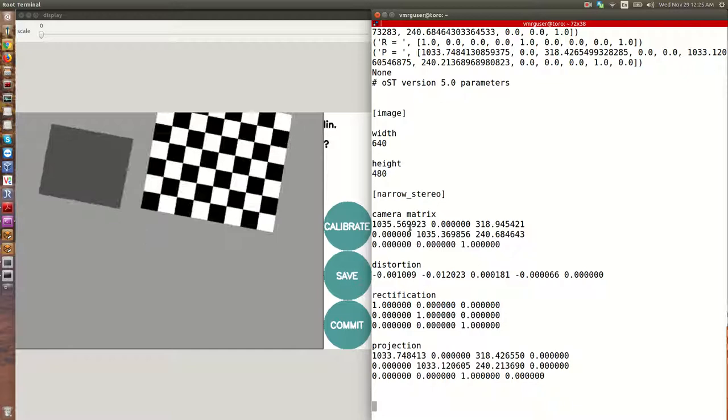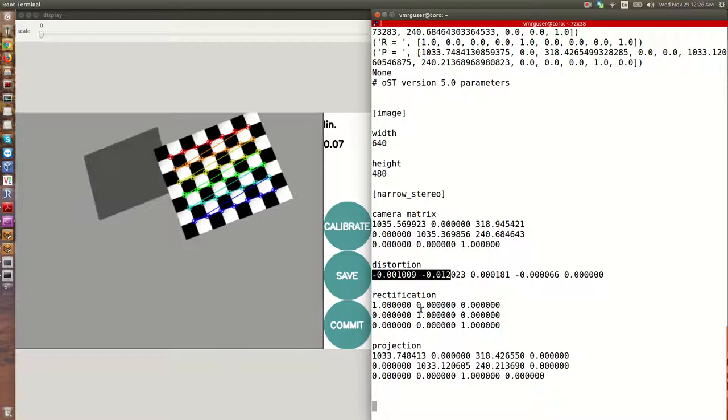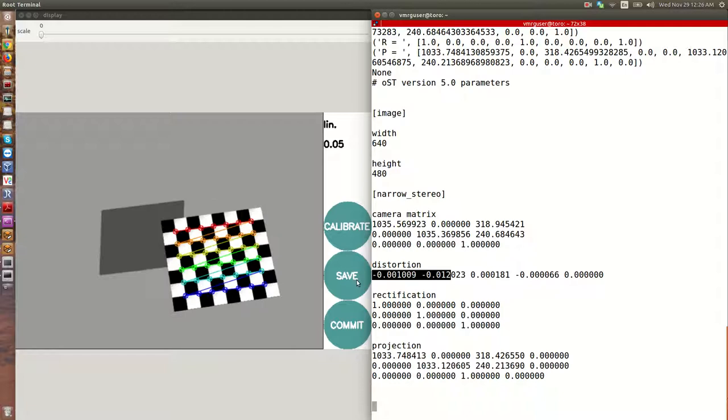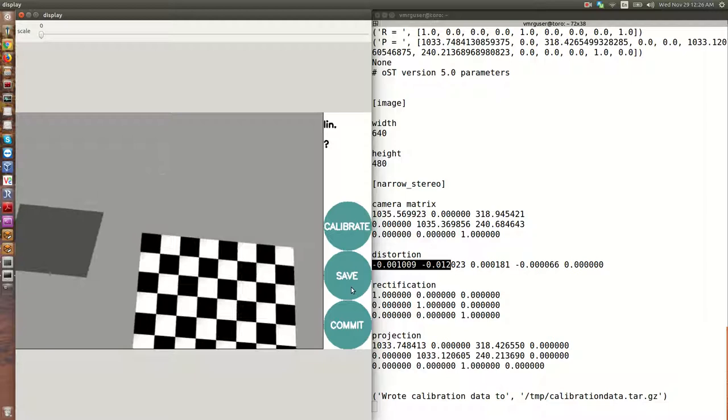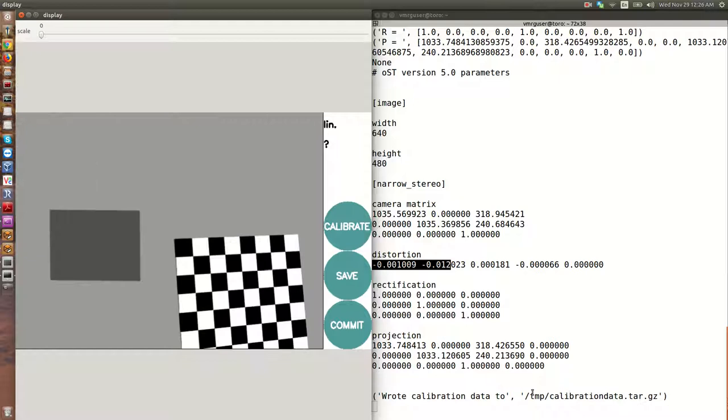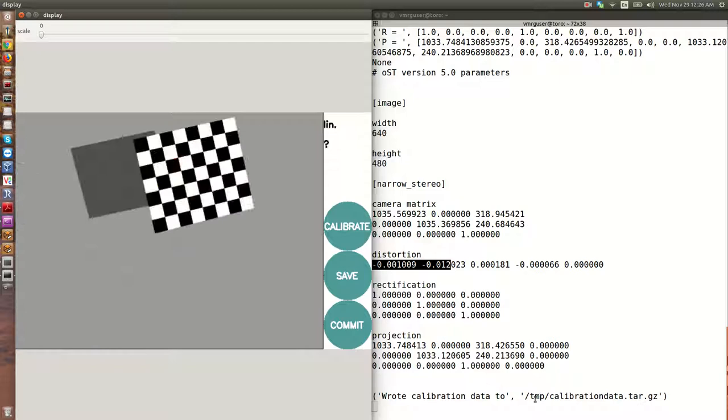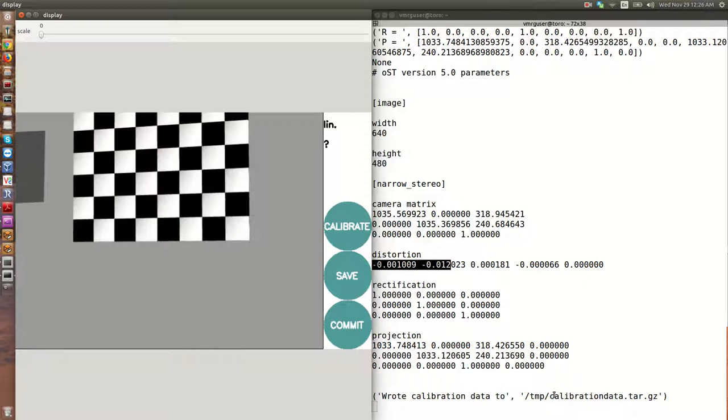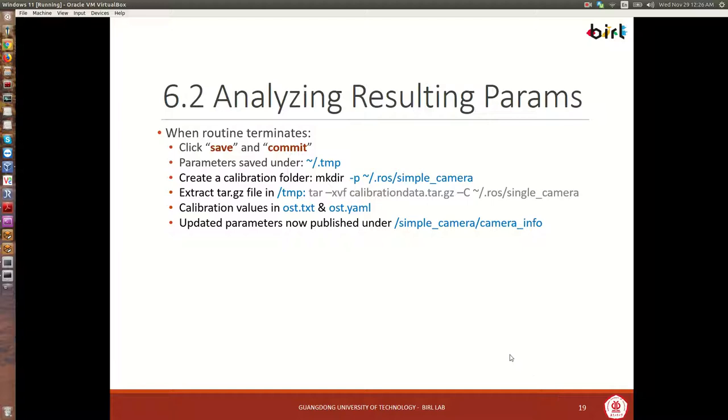We also get some information, width, height, just the camera matrix, the distortion matrix, things like this. So the next stage is whether we want to save these results. And we do. So you would click save and then it'll print out here where this information is being saved to. Now, the ROS tutorial says that this would be saved to the dot Ross camera info folder, but I've never actually seen that happen, at least in my experience. So what I wrote here is that parameters are saved under the temp folder. So there's no dot here. It should just be temp.